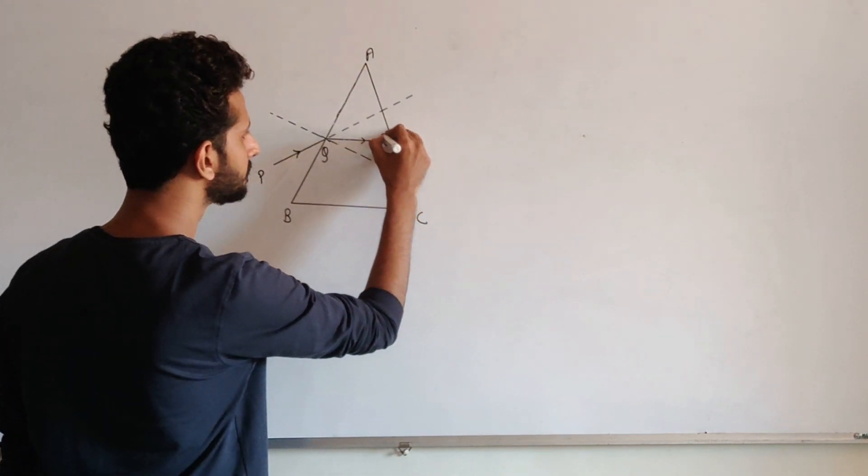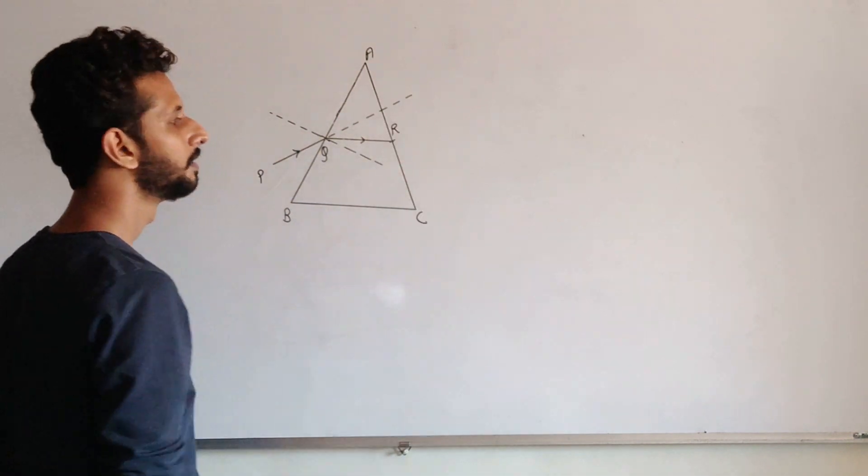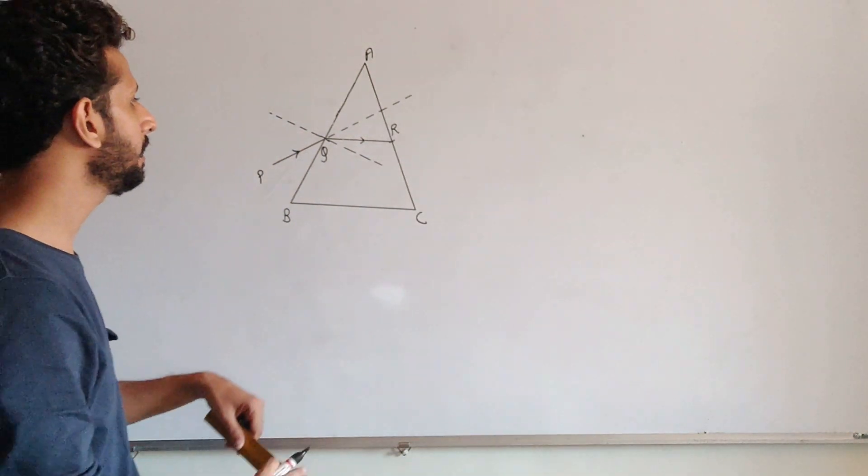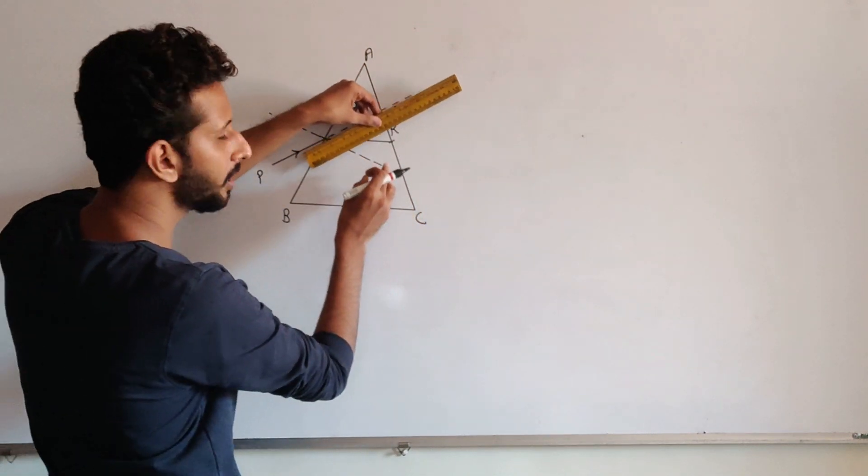So QR, we will say, is the refracted ray. Now, again, when the ray is coming out, before showing the ray coming out, you have to again draw the normal.